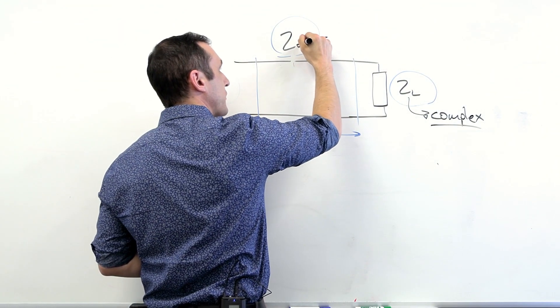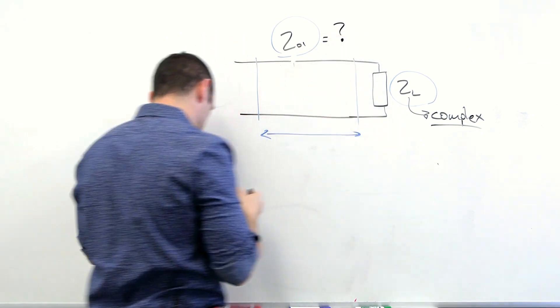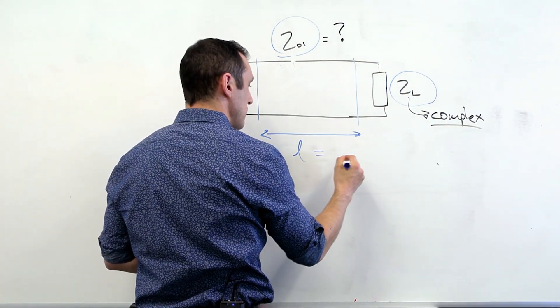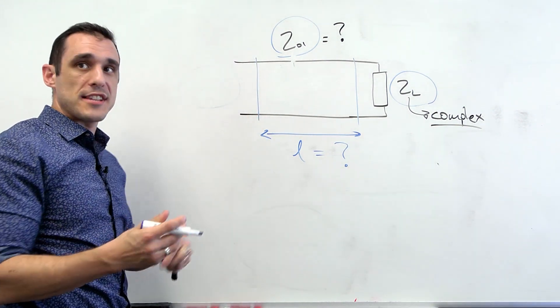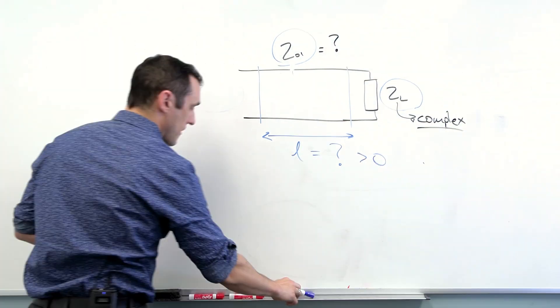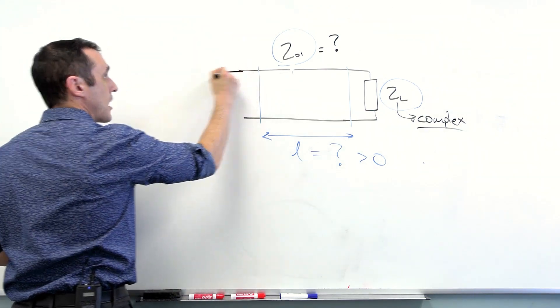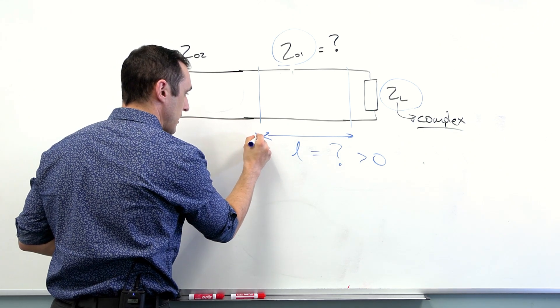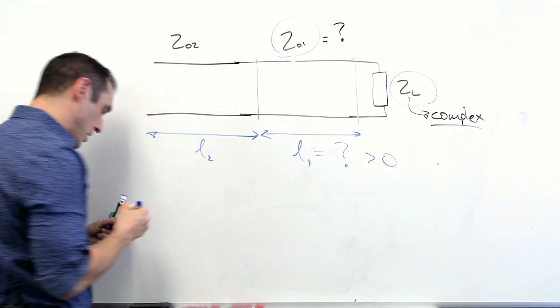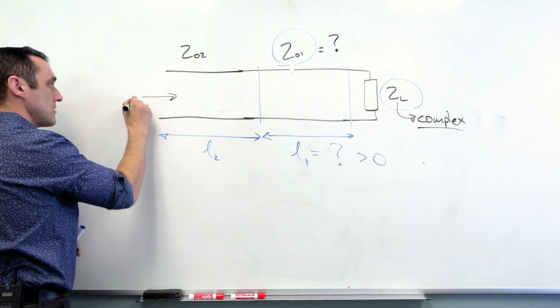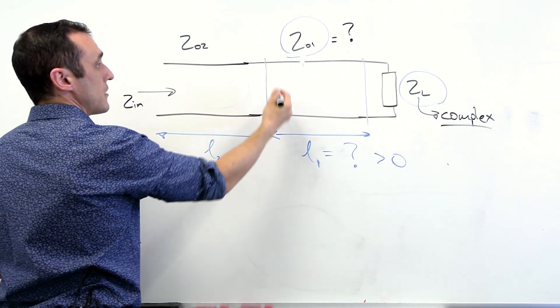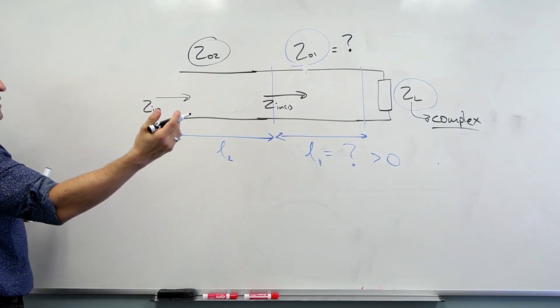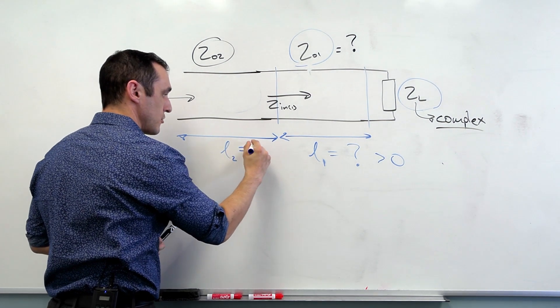That additional section of transmission line is actually not a quarter wavelength transformer. In this case, what we would have is a first section of transmission line and we need to figure out what its impedance is going to be. And then we have this length of this first section of transmission line L that could be some value, actually not a quarter wavelength, maybe not a half wavelength. We don't exactly know, but it's going to be something that is greater than zero. Then we'll have a second section of transmission line with its own characteristic impedance. And this second section of transmission line can then be our quarter wavelength match.